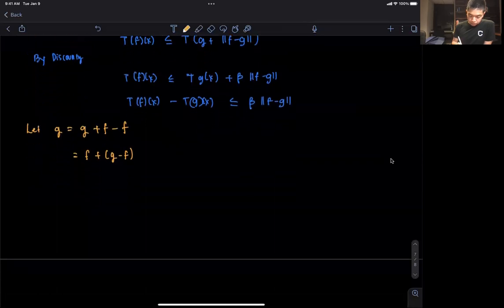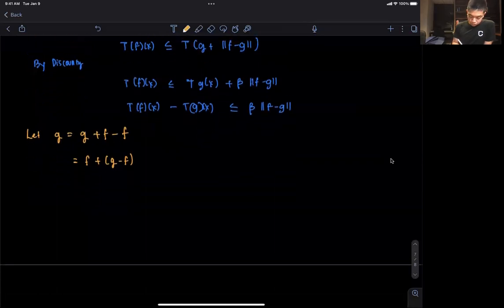From here, we know that g is less than or equal to, again same transformation, f plus the norm of g minus f, the sup norm.